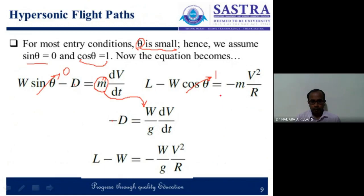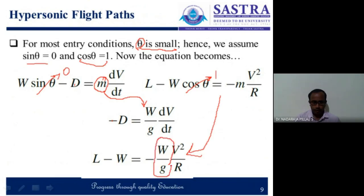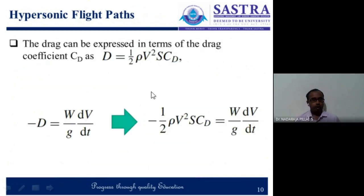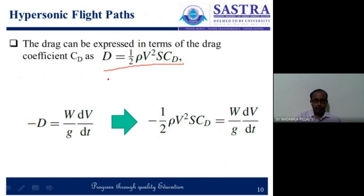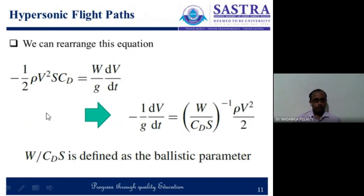Similarly, this equation becomes L minus W equals m, which is W by g. Further, we know that drag can be defined as D equals one-half rho V-squared S C_D, and then we can write this equation as one-half rho V-squared S C_D equals W by g times dV/dt. So we can finally arrive at this particular equation.